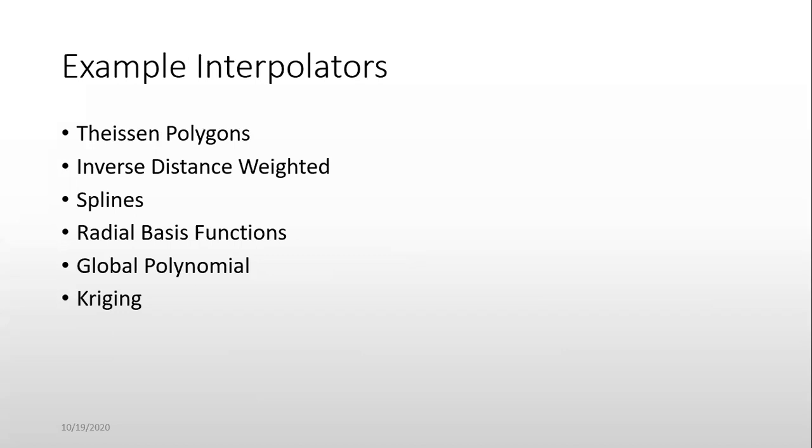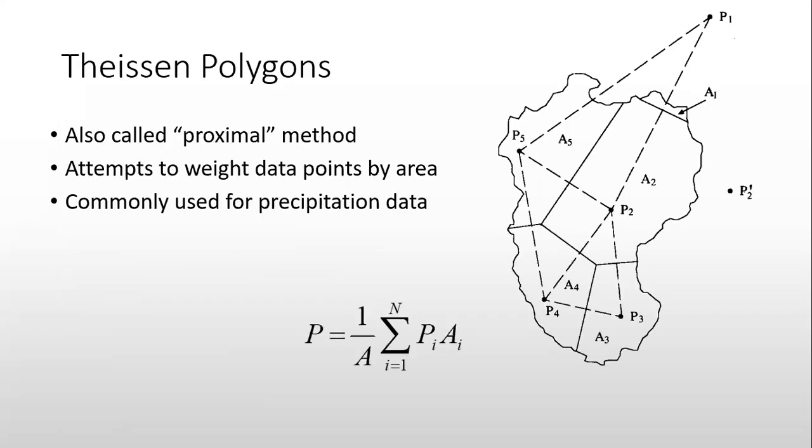Inverse distance weighted IDW is for finding certain variations, for generating contours or something. Spline and kriging, all these three—IDW, spline, and kriging—are somewhat similar. I will show you one example. Thiessen polygon, also called proximal method. This statistical formula attempts to weight data points by area, commonly used for precipitation data, but not just precipitation data, we use this for different purposes.